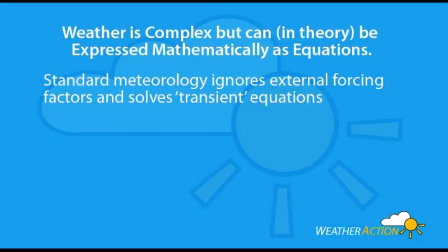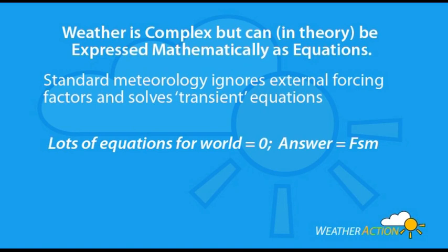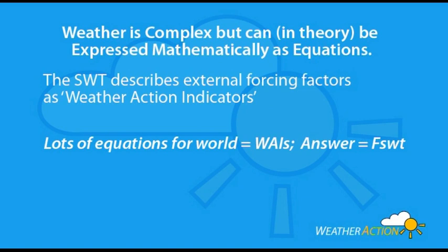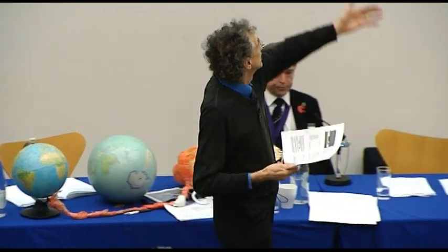What has happened? There's an external influence. They know what's going to happen from internal dynamics, but they don't know that actually something else is going to happen in two days' time — but we know that. They solve what's called the transients: lots of equations for the world equals nothing — that's the standard mutuality forecast. We solve another equation: lots of equations for the world equals weather action indicators. These describe the SWPs, when they're going to come, and other modulations such as what the moon is doing. You add fsn plus fsw — they are a solution, but the fsn is just a transient; it disappears, so it's of no value for forecasting.